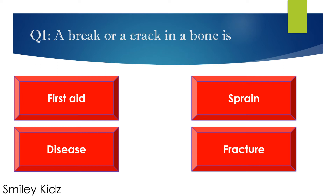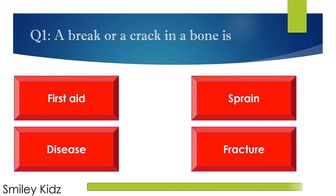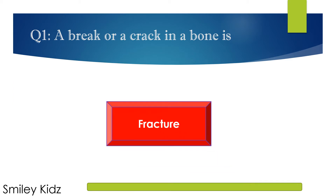Question number 1. A break or a crack in a bone is? Options are A. First aid, B. Sprain, C. Disease, and D. Fracture. Your time starts now. Your time is up. The right answer is fracture. A break or a crack in a bone is fracture.